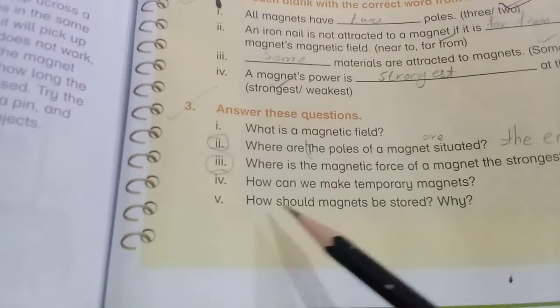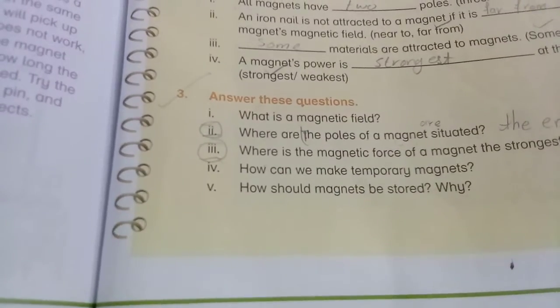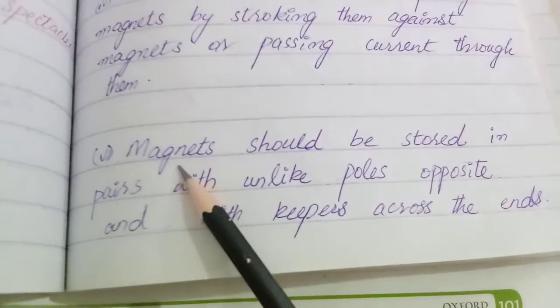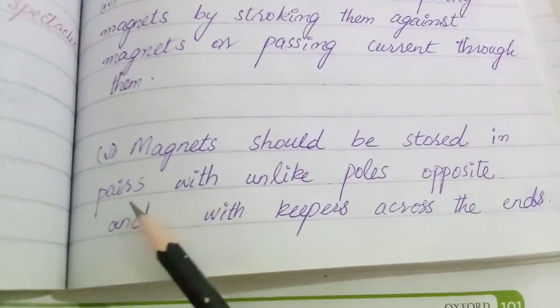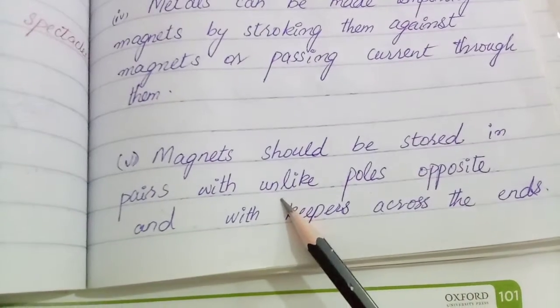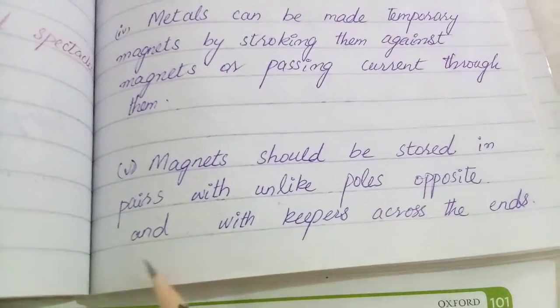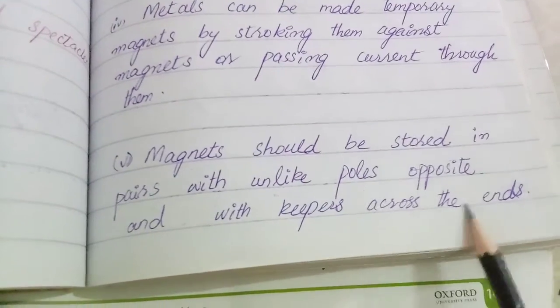How should magnets be stored? Why? Magnets should be stored in pairs with unlike poles opposite and with keepers across the end.